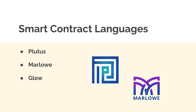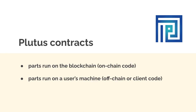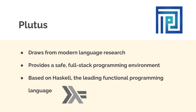Smart contracts for the Cardano blockchain specifically can be written in multiple languages: Plutus, Marlowe, and Glow. Plutus is a smart contract development and execution platform where some parts run on the blockchain and some run on the user's machine as off-chain or client code. Plutus draws from modern language research and provides a safe full-stack programming environment. It is based on Haskell, the leading functional programming language.